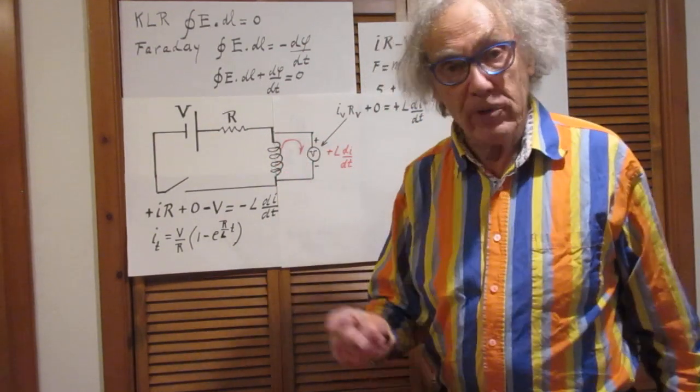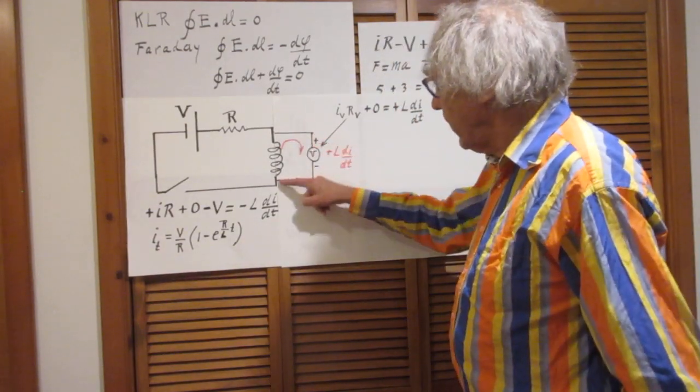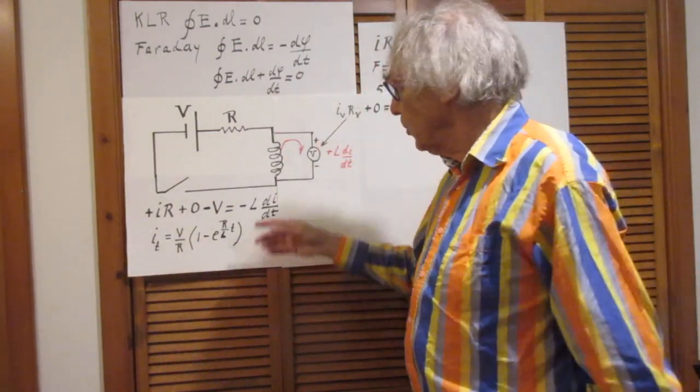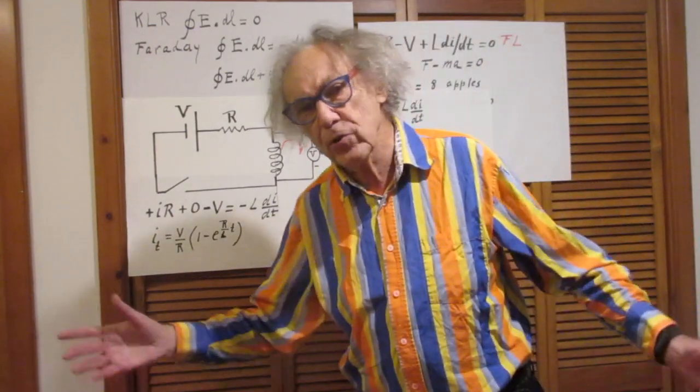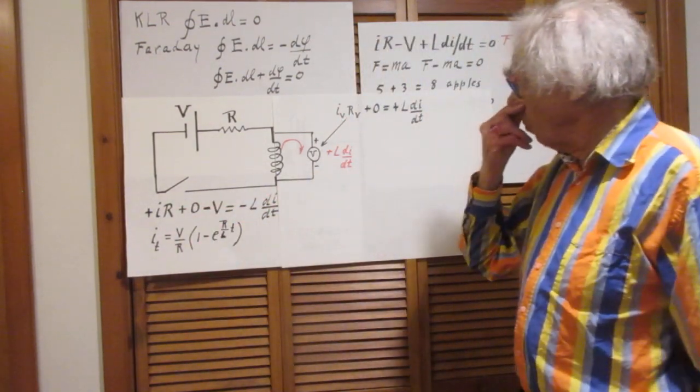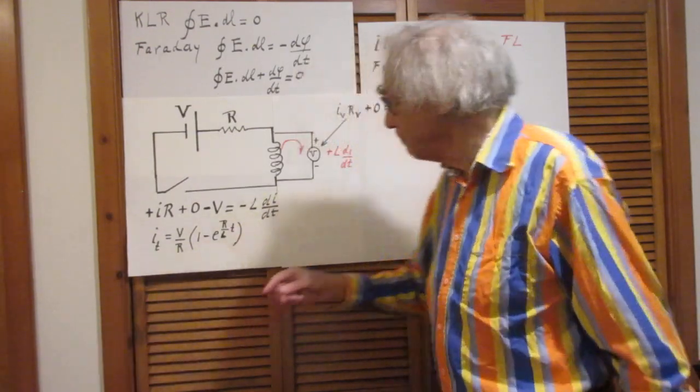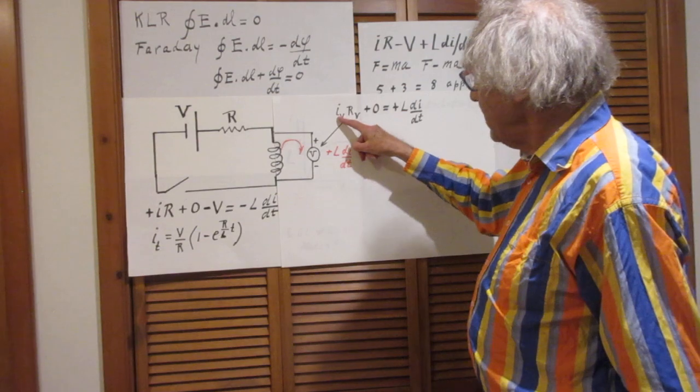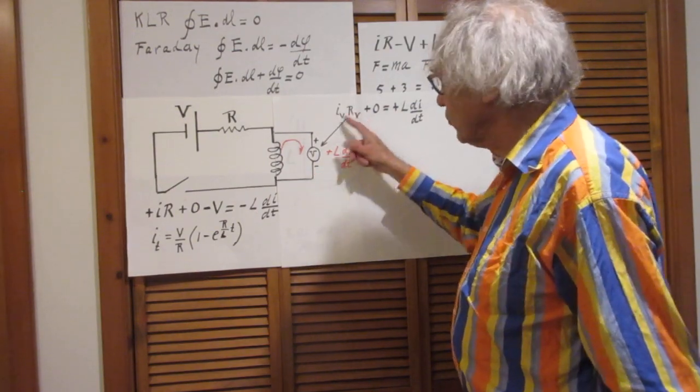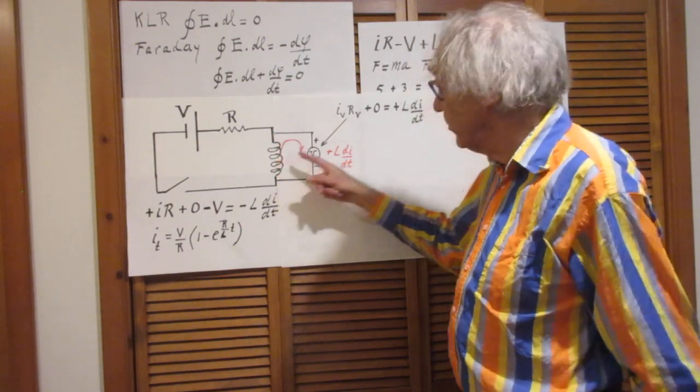Now, in this circuit, Kirchhoff's loop rule obviously doesn't work. Because there is this L di dt in there. The current at any moment in time, which in the beginning changes of course, through the voltmeter, is way lower than the current through here. Because the resistance of the voltmeter is hundreds of megaohms. So I call that I_V to remind you that it's nothing to do with this I.